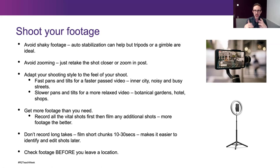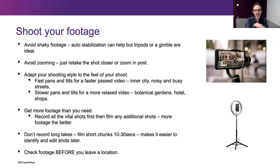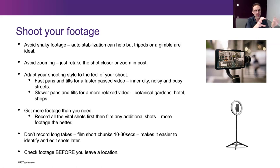When you're composing your shots and moving your camera around, you can use that to your benefit. If you're doing a more relaxed video — say botanical gardens or hotel shops — your camera movements might be a little bit slower. But if you're talking about the inner city and the buzz of society, then you might be a little bit faster with your camera movements, really quick pans, making it more dynamic. You can suit the movement of your camera to the type of shoot you're doing.